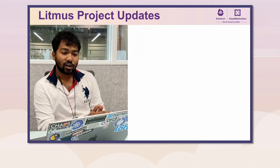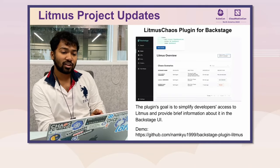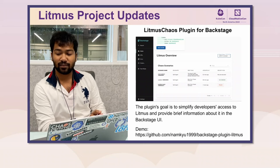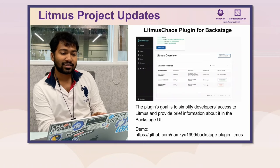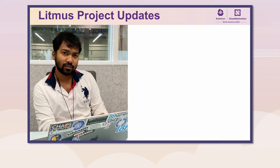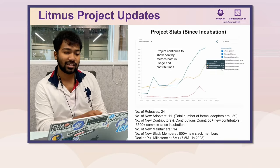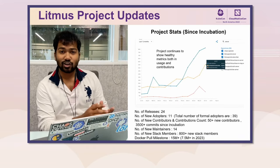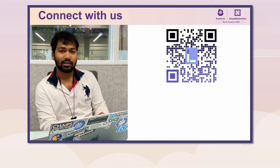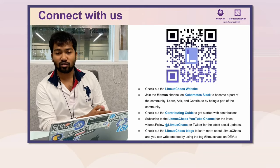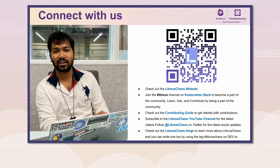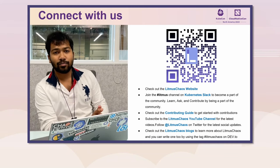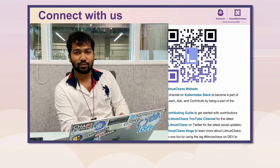We also have an exciting update on the Litmus Chaos plugin for Backstage. The plugin's goal is to simplify developer experience for better access to Litmus and provide brief information on the Backstage UI. Lastly, you can join the Litmus community by joining the Litmus channel on the Kubernetes Slack. Check out the contributing guidelines and all the resources available to be a part of the Litmus community. Thank you.